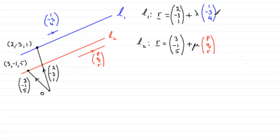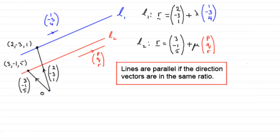I could multiply it by a negative number if I wanted, and I would have -1, 3, and -4. It would be a vector exactly the same length as this, but in the opposite direction, but that doesn't matter. It would still signify that the lines were parallel. So basically what we've got is that lines are parallel if the direction vectors are in the same ratio.